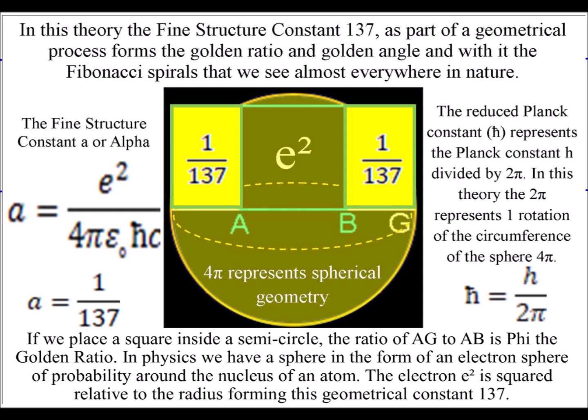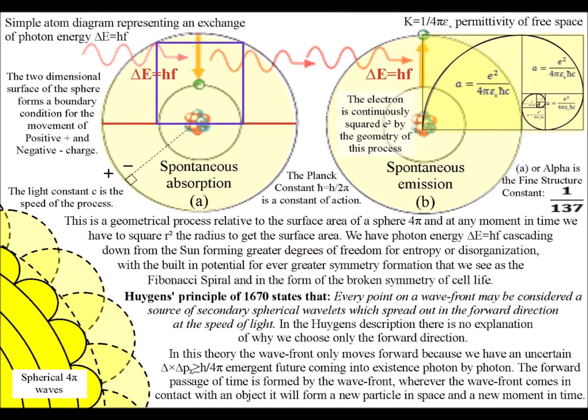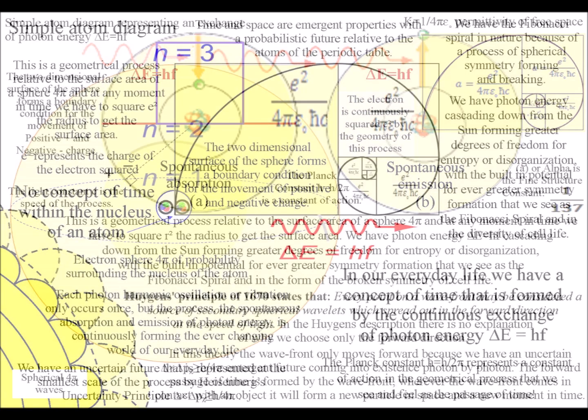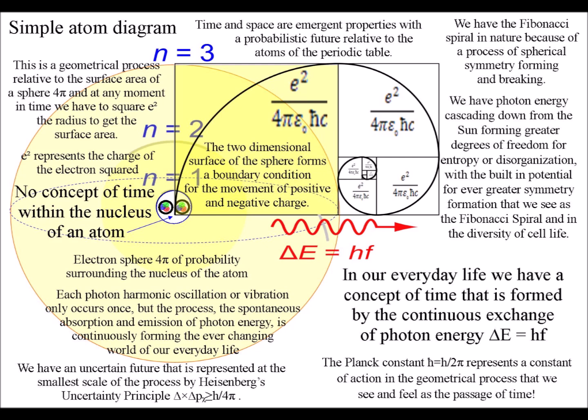Photons being spin-1 particles represent spherical symmetry. The electron having half-spin represents the spherical symmetry breaking, forming the potential for the broken, imperfect symmetry of our everyday three-dimensional life.